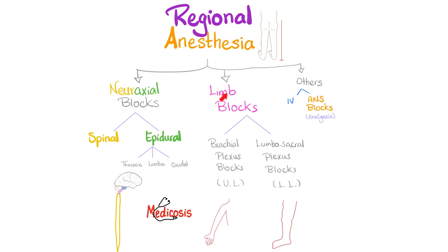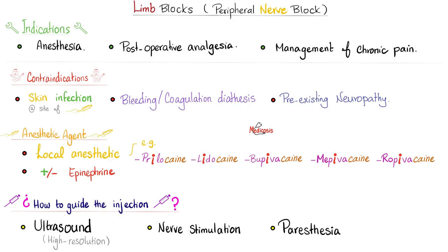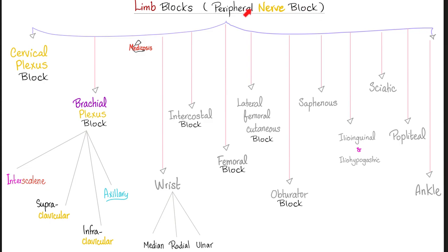Regional anesthesia is either in the midline or on the periphery. Limb blocks — why do we need them? Anesthesia, post-operative analgesia, and management of chronic pain. Contraindications: skin infection at the injection site, bleeding or coagulation diathesis, or pre-existing neuropathy. The anesthetic agent used is local. In regional anesthesia we use a local anesthetic medication, and you might consider adding epinephrine. How do I know I'm hitting it right? Ultrasound, nerve stimulation, and paresthesia. You're not trying to hit the nerve — you're trying to inject around the nerve.